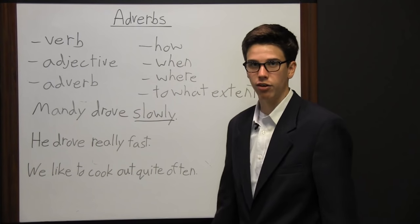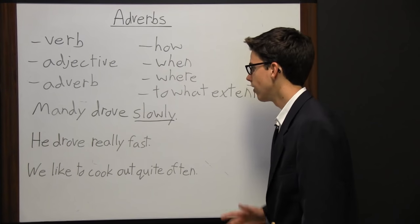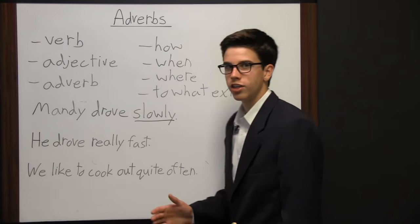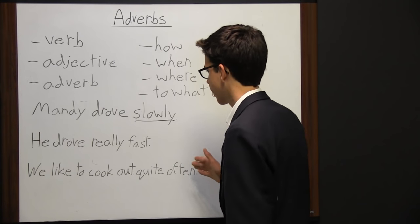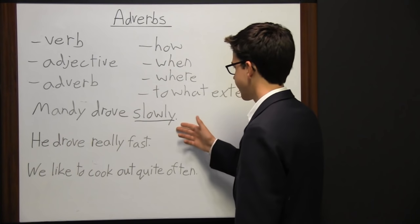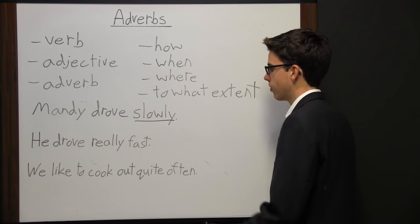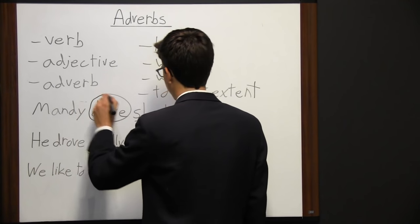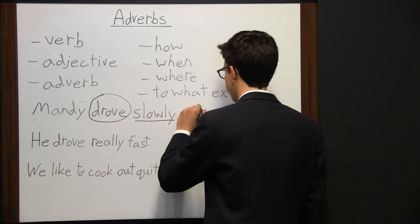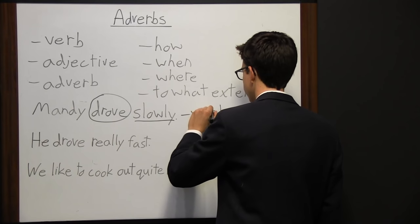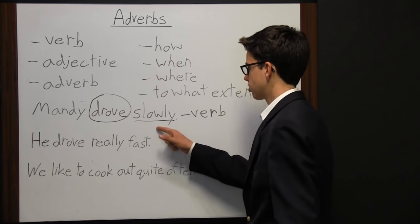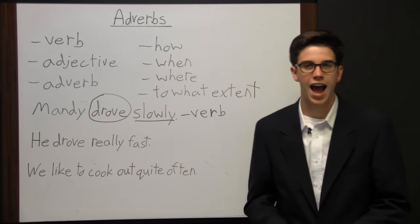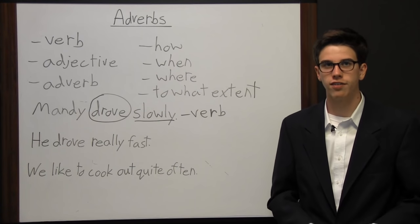Not all adverbs end in '-ly,' and not all '-ly' words are adverbs, so you still have to look specifically at the word. The adverb 'slowly' is describing 'drove,' which is a verb. Slowly is telling the reader how Mandy was driving — slowly.